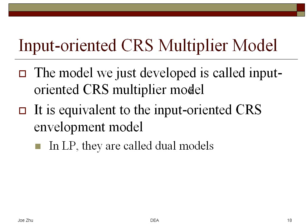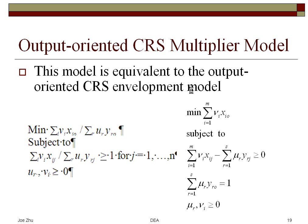So this is actually called input-oriented CRS multiplier model. And this model, the input-oriented CRS multiplier model, and the input-oriented CRS envelopment model are equivalent. And in the LP, linear programming terminology, they are actually called dual models. So you can solve either one of the models and you will get the same results, get the same efficiency scores.